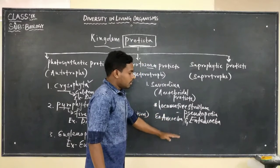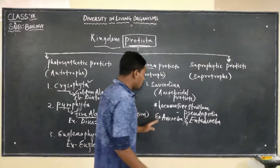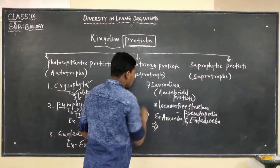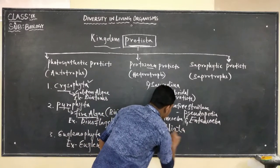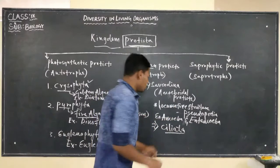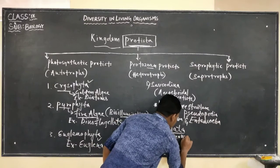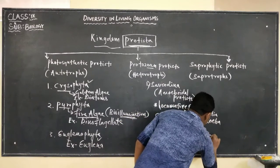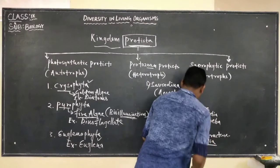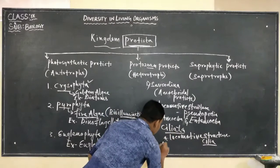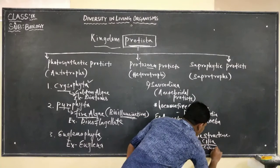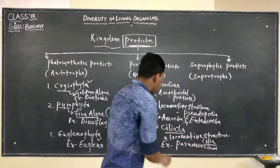Further classification will be based on locomotive structure. The first one is Sarcodina; based on locomotive structure, next we have Ciliata. By this name you might understand they use cilia for locomotion, so the locomotive structure is cilia. The organism placed under Ciliata is Paramecium, which shows locomotion by cilia.